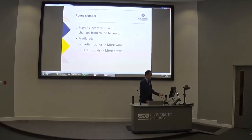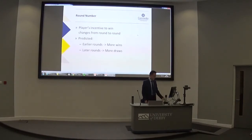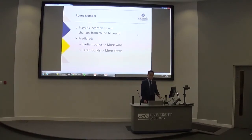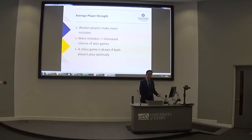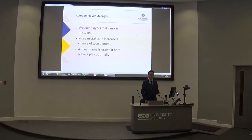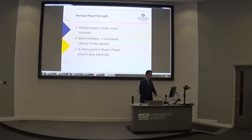Round numbers are another variable. When you play tournaments, your incentive to win changes for each round — people typically have a stronger drive to win at the start, and in later rounds that drive dies down, so you usually see more draws. The average player strength also matters: two weak players will make more mistakes on average, giving one player greater chances to win, whereas two strong players will make very few mistakes, increasing the chance of a draw — so even if two players have the same rating, the absolute level of that rating affects the outcome.